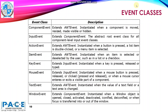Java provides a number of Event Classes. For example, Component Event — the Component Event Class extends AWT Event, and is instantiated when a component is moved, resized, made visible, or hidden. Input Event extends Component Event; it is the abstract root event class for all component-level input event classes. Action Event extends AWT Event and is instantiated when a button is pressed, a list item is double-clicked, or a menu item is selected. Item Event extends AWT Event and is instantiated when an item is selected or deselected by the user, such as a list or a checkbox.